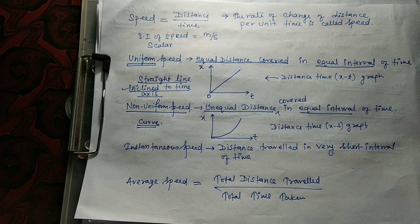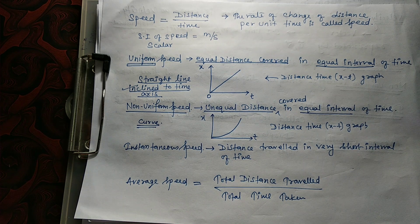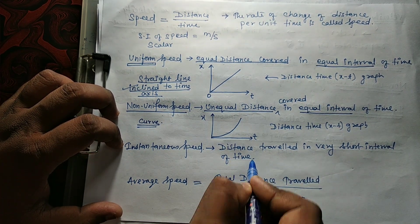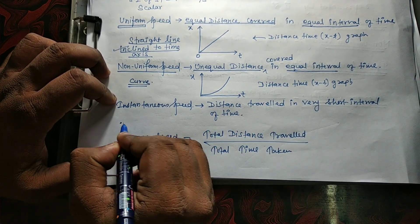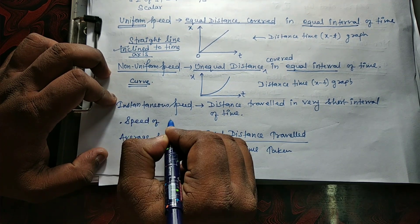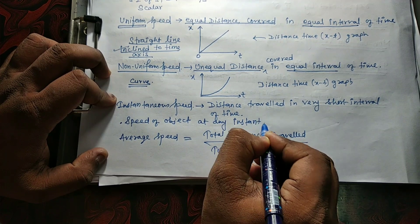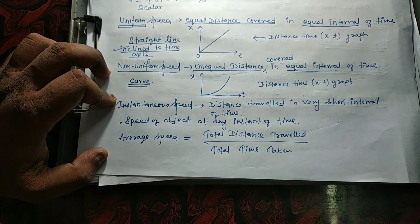When you watch a bike and look at the speedometer, we see the instantaneous speed. If we suddenly increase the accelerator, we see the speed of any object at any instant of time. The speed of an object at any instant of time is known as instantaneous speed.